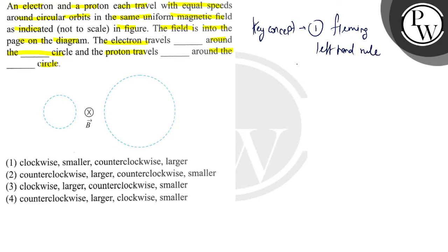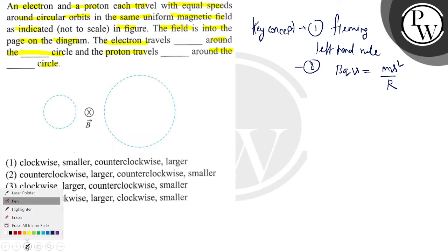Key concept number two is the relation BQV is equal to MV square by R. So to solve this particular problem I will use these key concepts. Let's understand the question. In the question we have given an electron. This is the electron and this is proton.